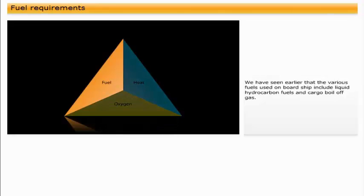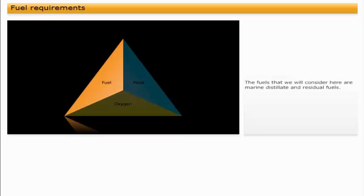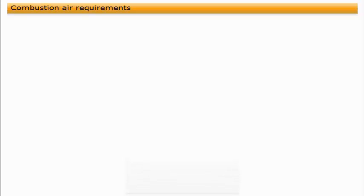We have seen earlier that the various fuels used on board ship include liquid hydrocarbon fuels and cargo boil-off gas. The fuels that we will consider here are marine distillate and residual fuels. These fuels cannot be burnt in the liquid form, and it is necessary to treat and process these fuels prior to combustion. The fuels must be delivered to the engine cylinder or boiler furnace in a way which generates vapor. This vapor can be ignited if the other combustion conditions of oxygen and heat are present.